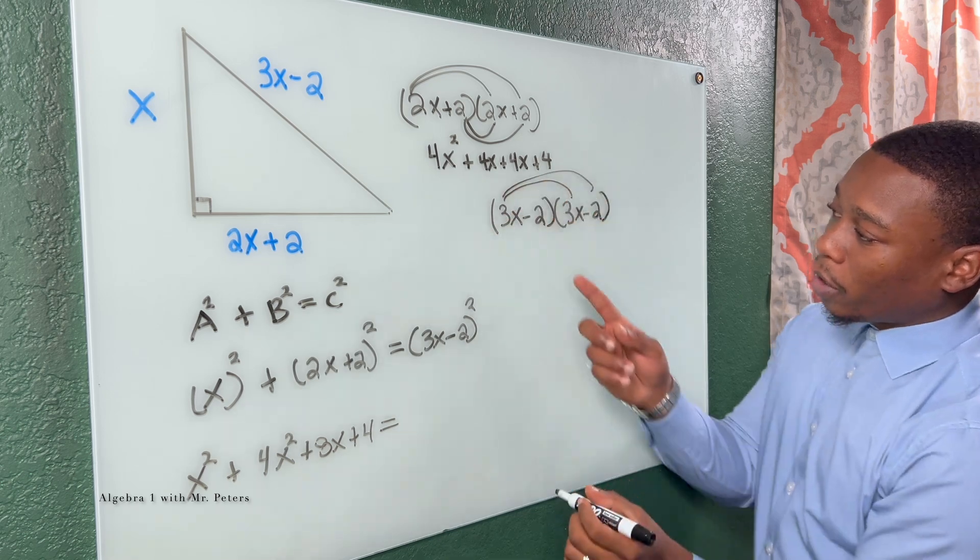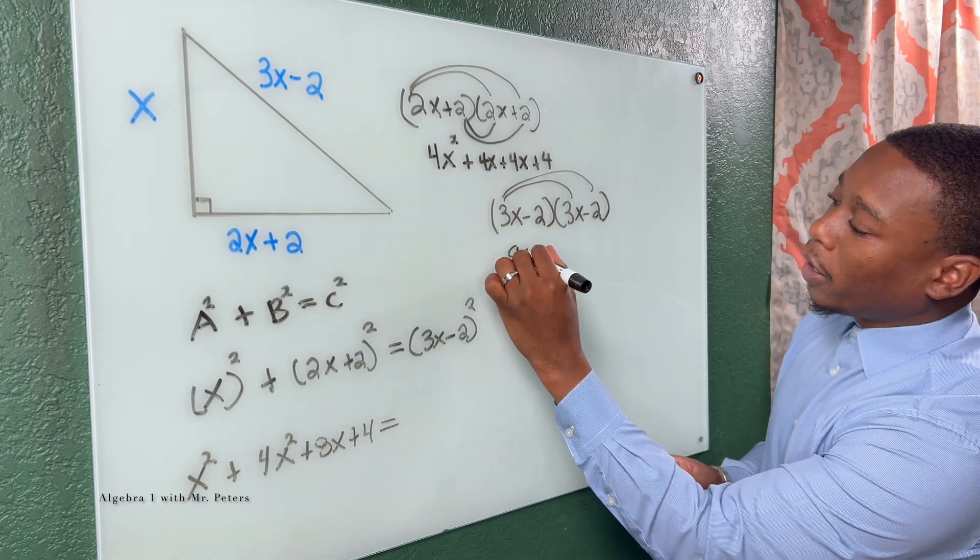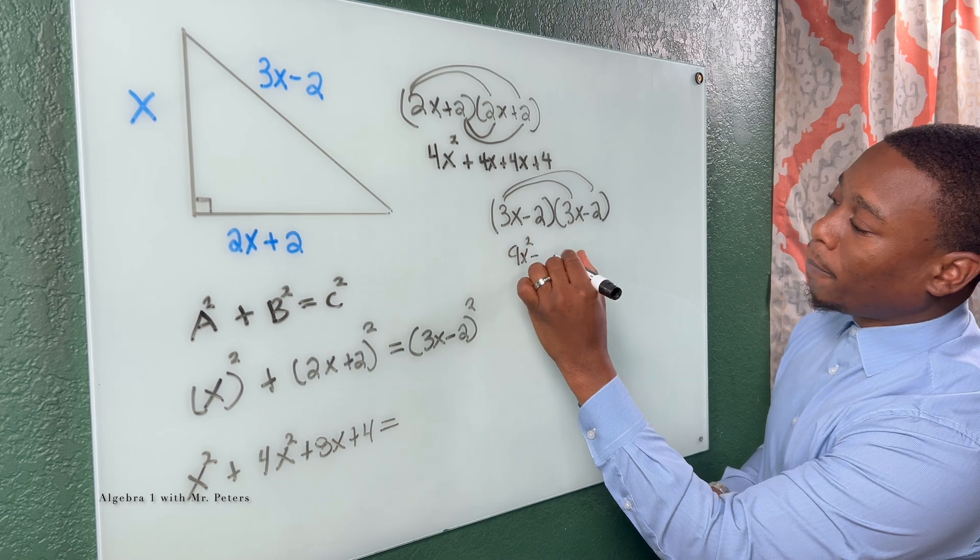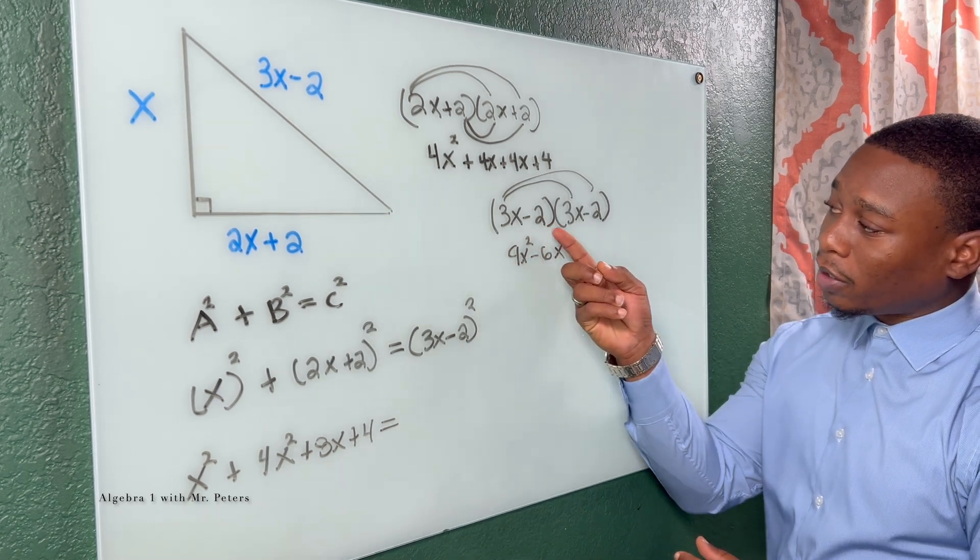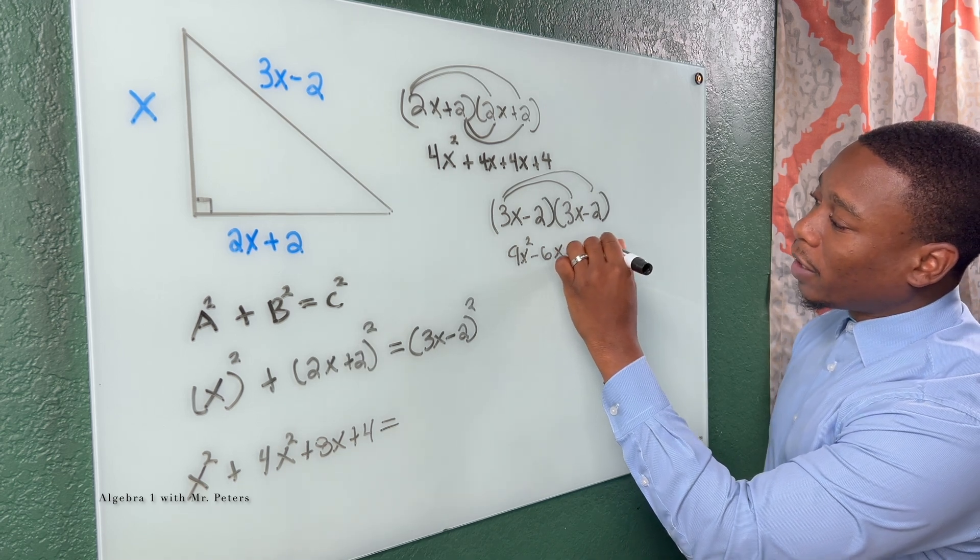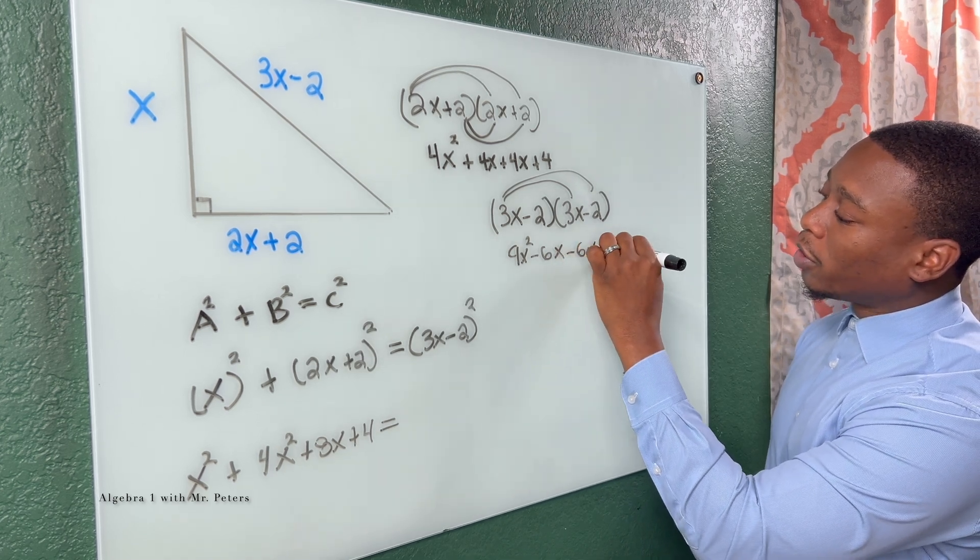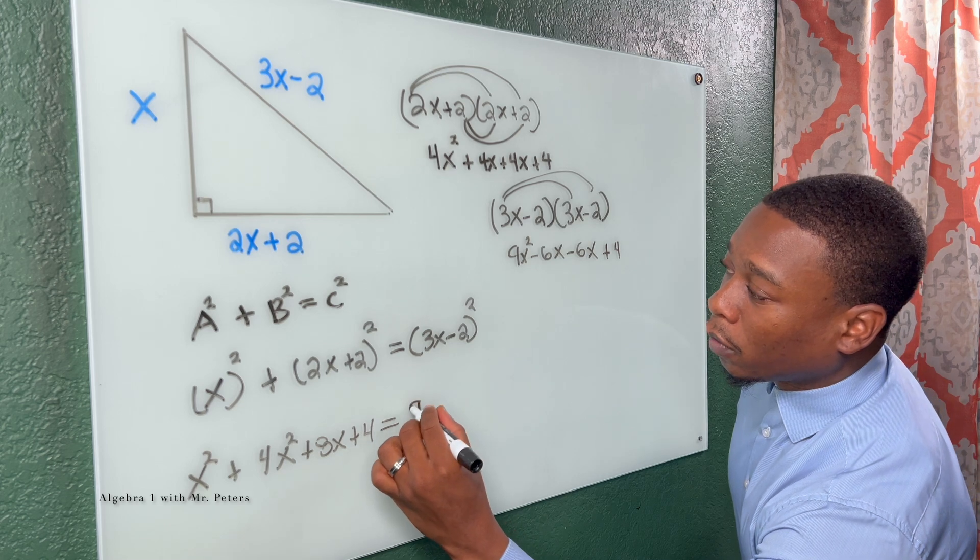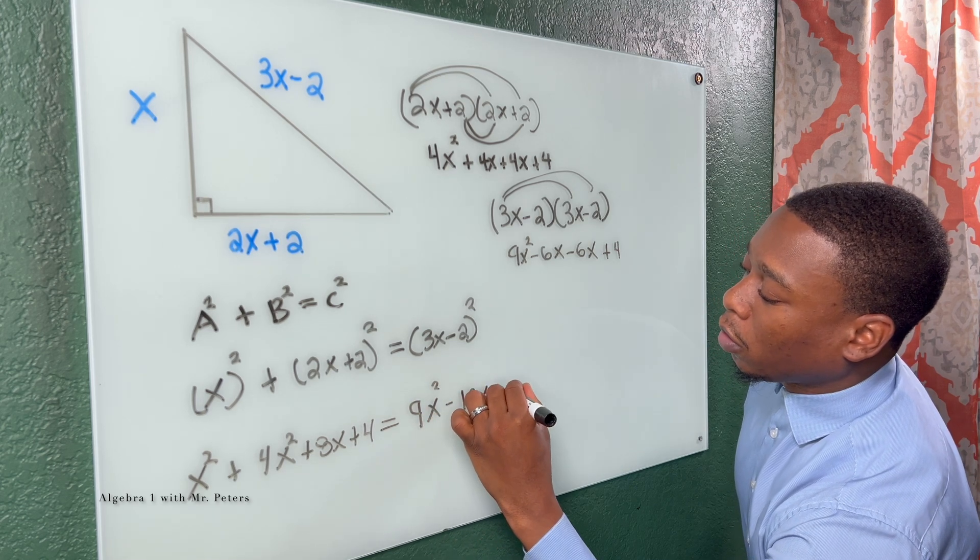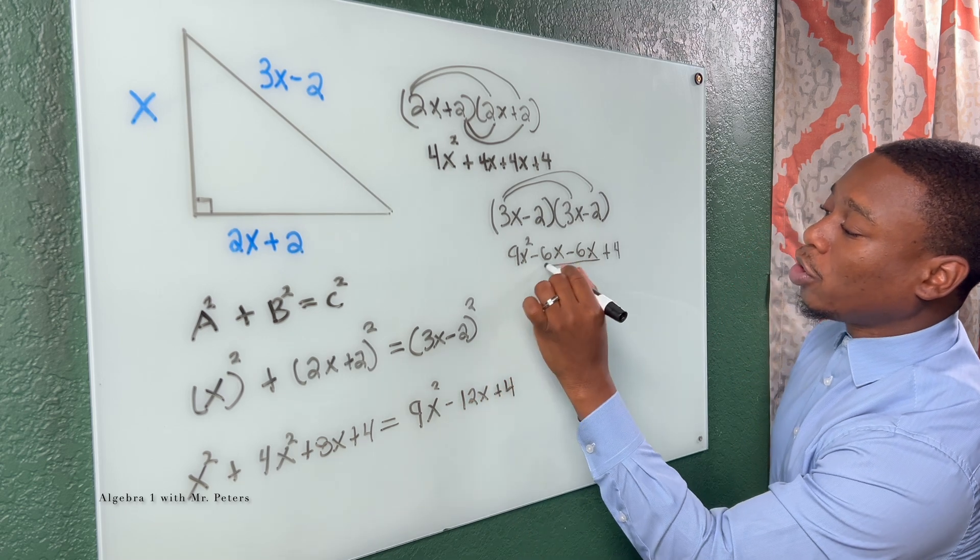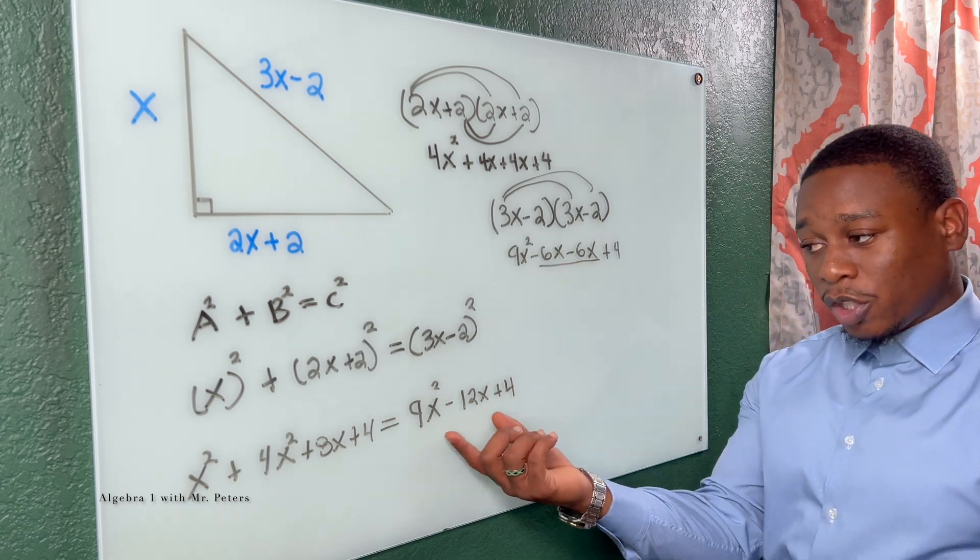So once I do that, I'm going to get 9X squared minus 6X. Then I go over to 2 and I'm going to do the same thing to distribute. So I'm going to get minus 6X again plus 4. So after we combine these two like terms, this is what we should have.